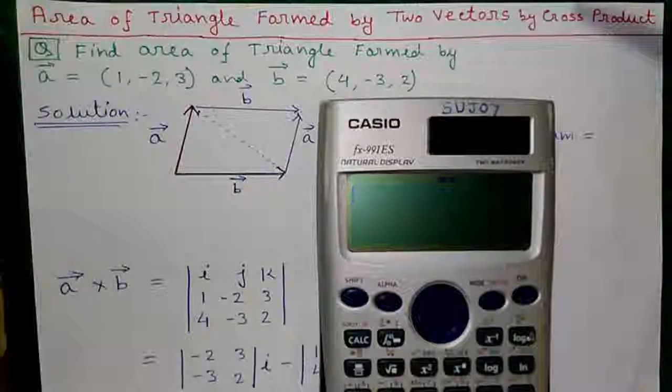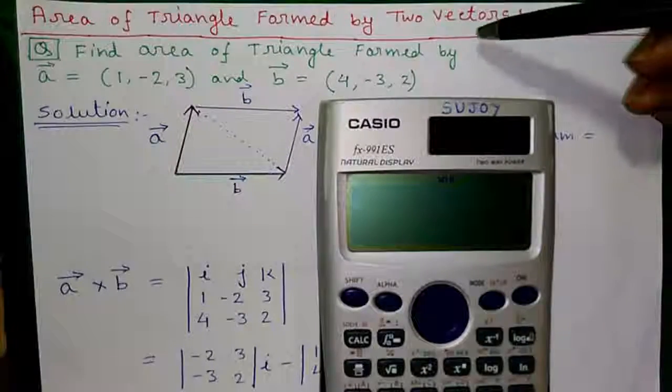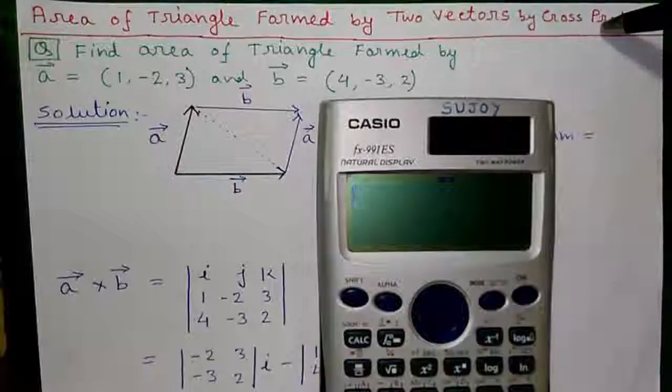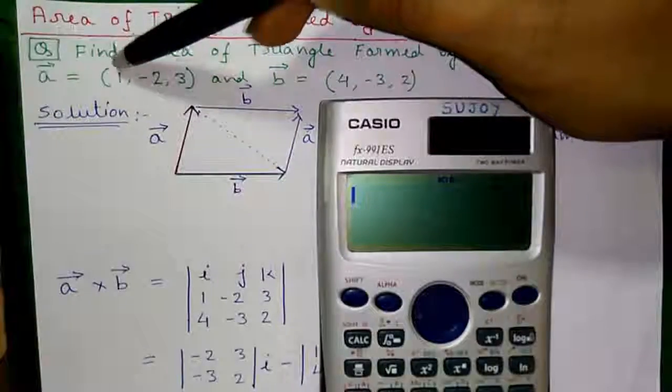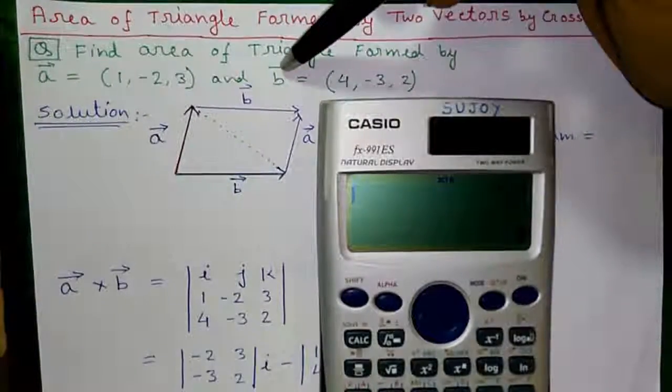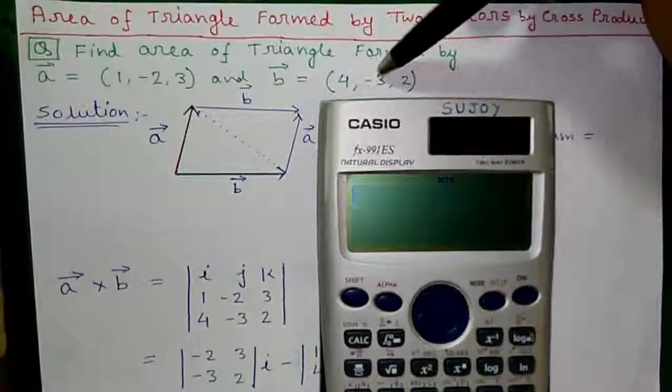Hello, I am Sujoy and today we will learn how to find area of a triangle formed by two vectors by cross product. So let's find area of the triangle formed by vector A having values 1, -2, 3 and vector B having values 4, -3, 2.